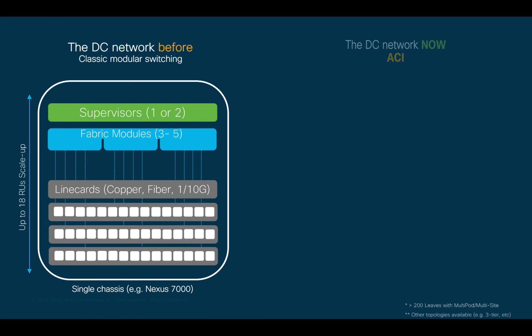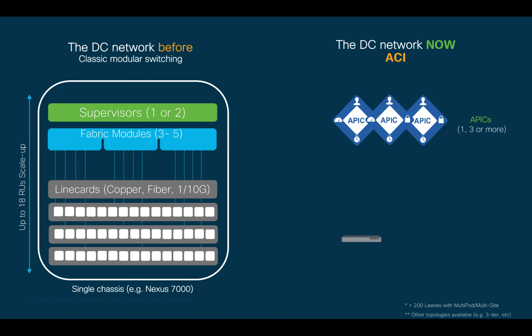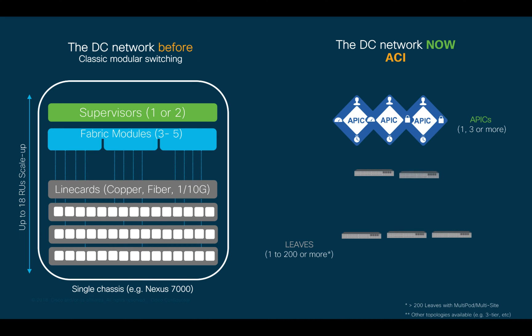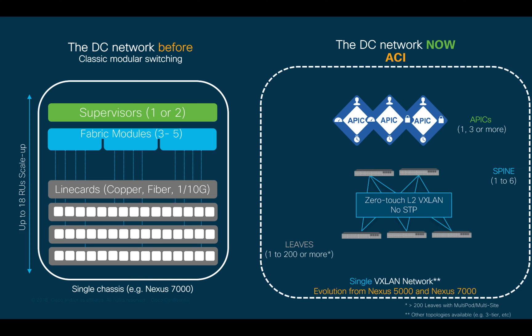ACI will scale as your business needs it. Need higher availability at the configuration layer? Add more APECs. Need more ports? Add more leaves. Or need more throughput? Add more spines. It is that simple and automatic.